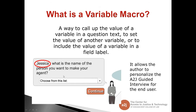So first, what is a Variable Macro? It's a way to call up the value of a variable in a question text, it's a way to set the value of another variable, and it's a way to include the value of a variable in a field label. Basically, it allows the author to personalize the A to J Guided Interview for the end user.